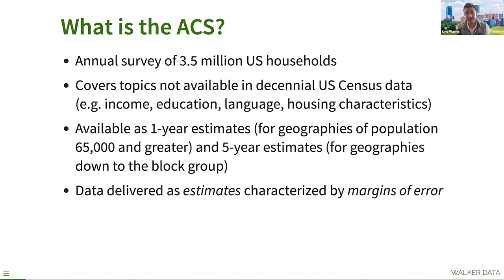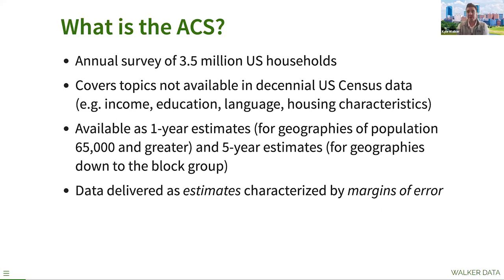ACS data come in two flavors: one-year ACS estimates and five-year ACS estimates. Understanding the distinction between the two is critical. One-year ACS estimates are released every year — the most recent ones are for 2022, and we'll be getting 2023 data likely in September of this year. Those are only available for geographies of population 65,000 and greater. The five-year estimates go all the way down to the block group level and are a rolling average over a five-year period, providing more statistical confidence. The data are delivered as estimates characterized by margins of error.